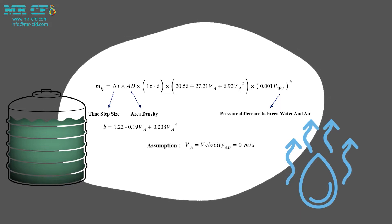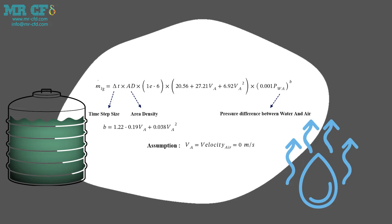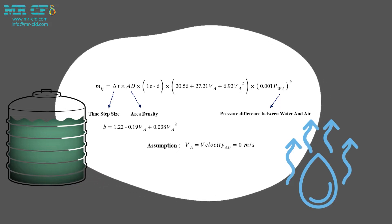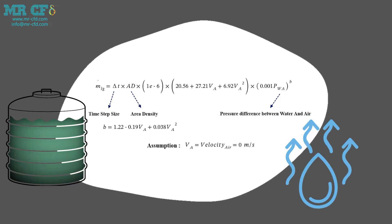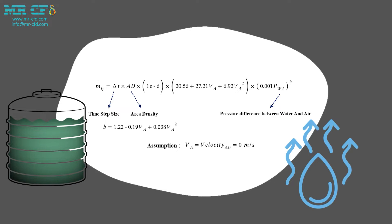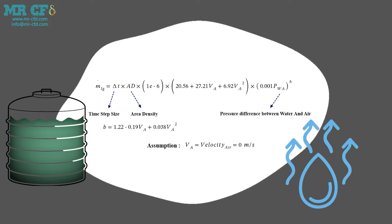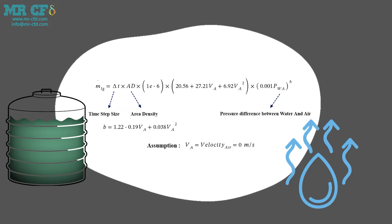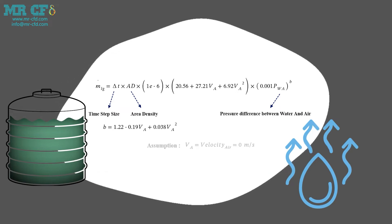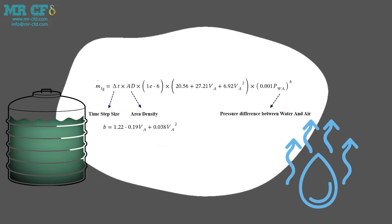In our specific problem, the air velocity is zero and the pressure difference equals 12,352 Pa. Area density is also related to the mesh grid.